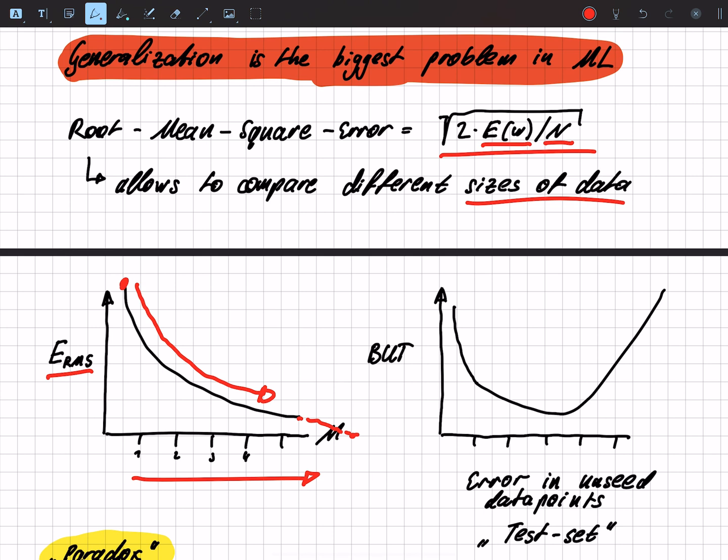It will definitely be zero at some point because we will have enough parameters in our polynomial function to represent each and every data point.